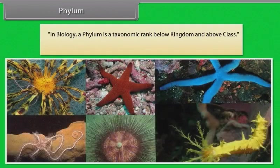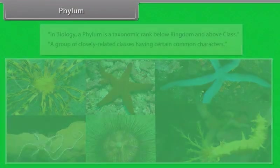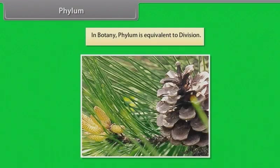In biology, a phylum is a taxonomic rank below kingdom and above class. It is a group of closely related classes having certain common characters. In botany, phylum is equivalent to division.